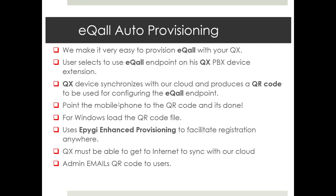For Windows eCall devices, you load the QR code with a file. It uses EPIGEE's enhanced provisioning to facilitate registration anywhere. The QX must be able to get to the internet to sync with our cloud, and also for eCall devices that are external to reach back to the QX. For the admin, they can simply email those QR codes to their end users.